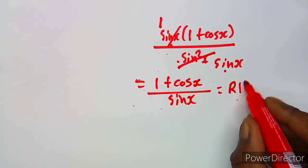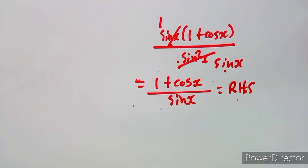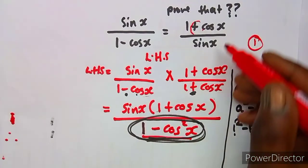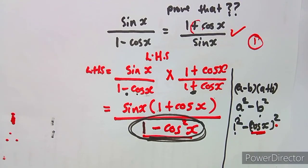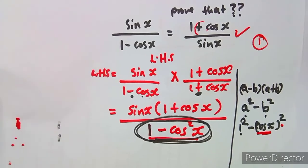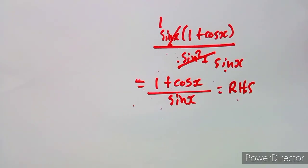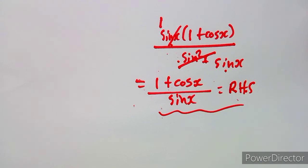That result — (1 + cos x) over sine x — is exactly what we had on the right-hand side, so the identity is proved. That's how they can ask these questions. We shall be working on more questions and revisions from Mason African Motifs, working on Mathematics. Till we meet again.